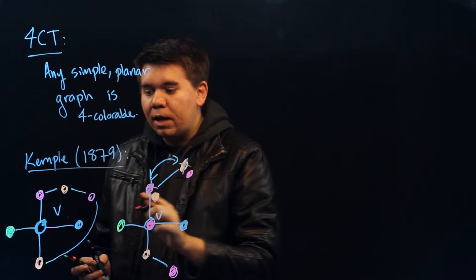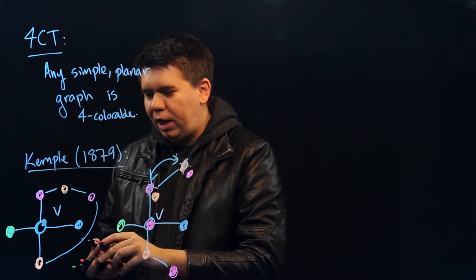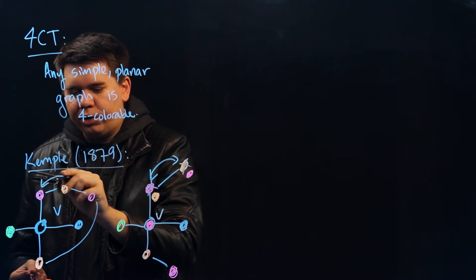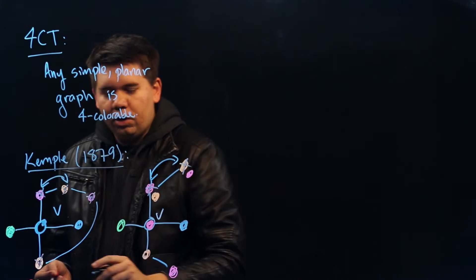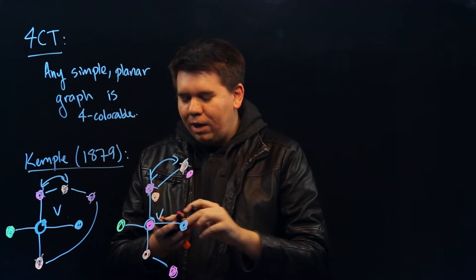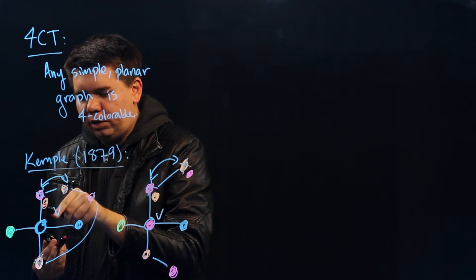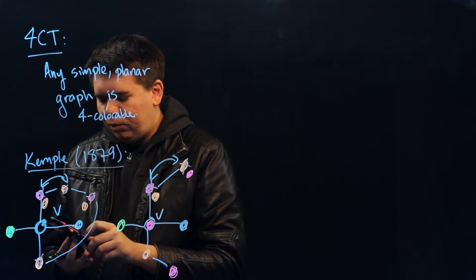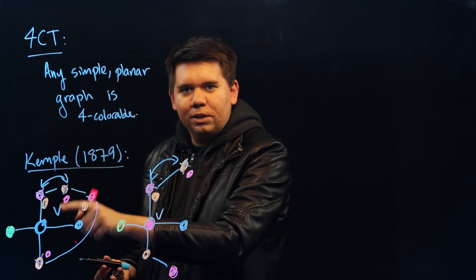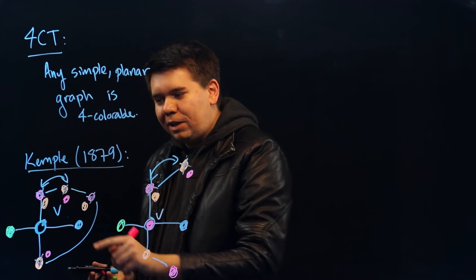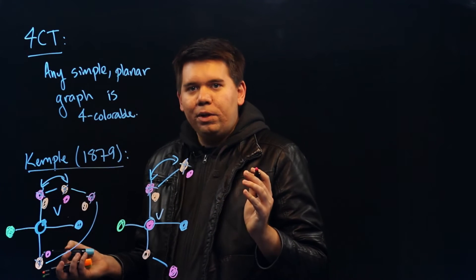However, if you're in the setting where pink and orange are connected by a chain, the same argument won't work. Because if you just try to switch all of the colors, we run into the same problem that showed up in the five-color theorem. This pink will become orange and the oranges will become pink, but that has effectively just swapped the position of pink and orange. The vertex is still connected to a pink and still connected to an orange. So what can we do?